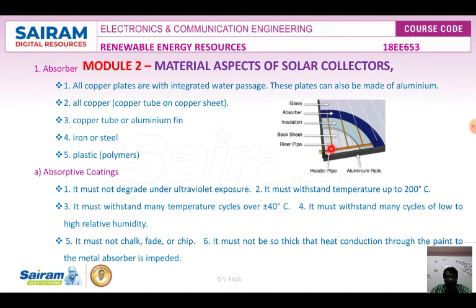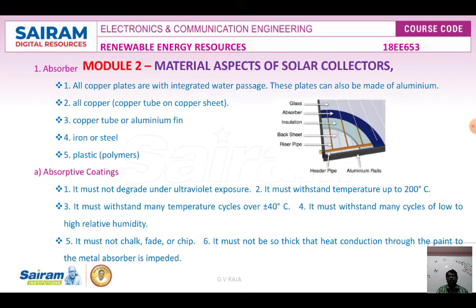Any solar collector consists of an absorber, glass insulation, backsheet, riser pipes, header pipes, and aluminium rails. The absorptive coating can range from flat black paint to baked enamel. The flat black absorber coatings have high absorptivity.